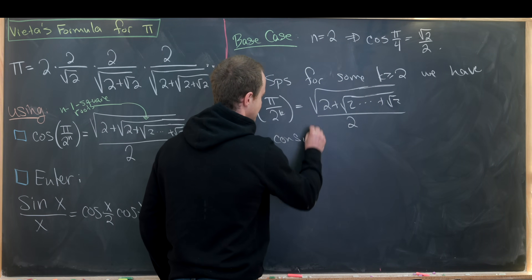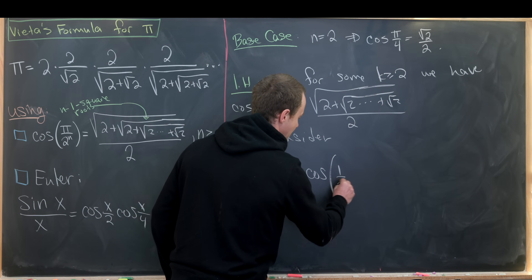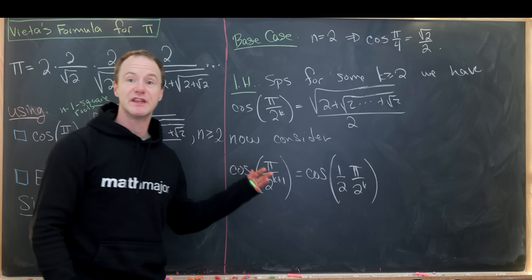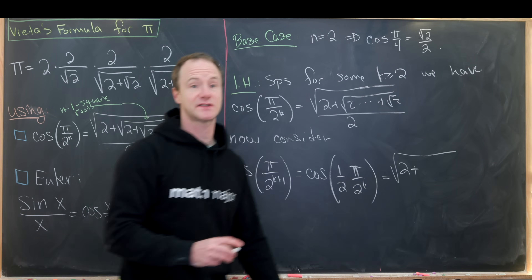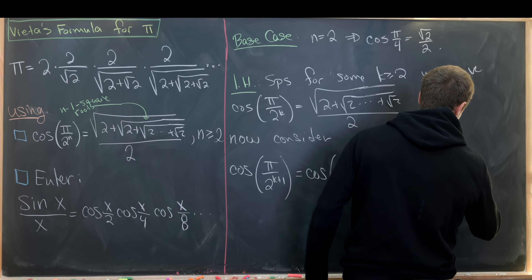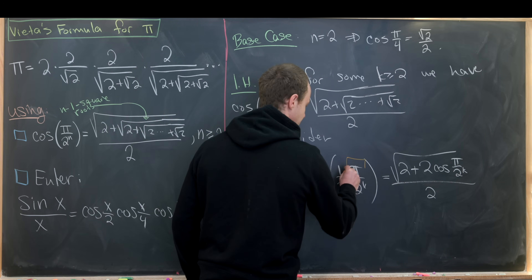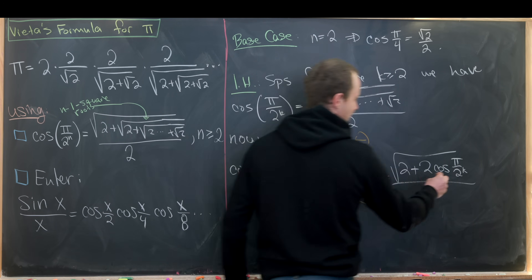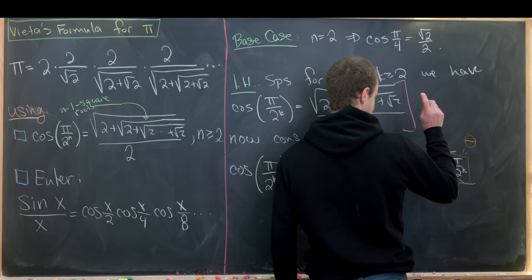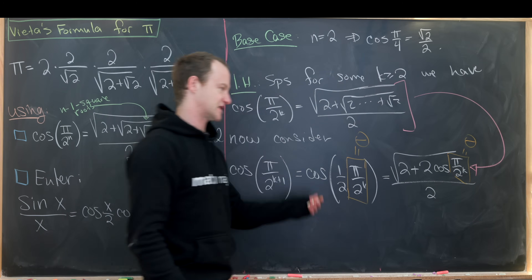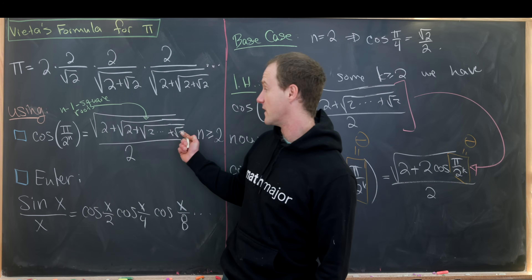Now consider the cosine of π over 2^(k+1), which equals the cosine of (1/2) times π over 2^k. We apply the half-angle formula for cosine, giving us the square root of (2 plus 2 times cosine of π over 2^k), all over 2. Substituting our induction hypothesis into this expression gives us exactly what we need to complete the induction step, proving this first result.